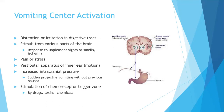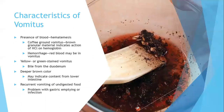Pain or stress can activate your vomiting center, as can the vestibular apparatus of the inner ear — that's the motion sensitivity part. Increased intracranial pressure can cause sudden projectile vomiting without nausea. Stimulation of a chemoreceptor trigger zone in the midbrain by drugs, toxins, or chemicals can also activate the vomiting center.